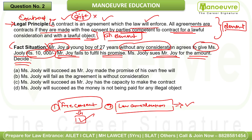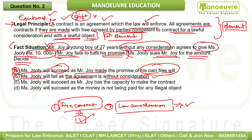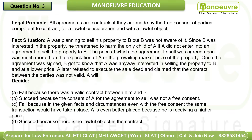In a contract, consideration must flow from both sides. Here there is no consideration — so it's not a contract. Will Mrs. Julie succeed? No. Option A says Julie will succeed because Joy made a promise of his own free will — but free will alone doesn't create a contract. Option B says Julie will fail because the agreement is without consideration — this is the correct answer. Options C and D say 'will succeed,' so they are eliminated. Option B is correct.